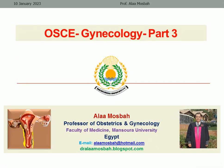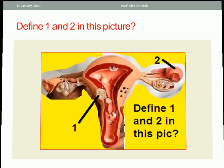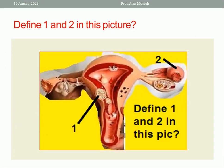Hello everybody, I'm Dr. Ala Musbah, Professor of Obstetrics and Gynecology, Faculty of Medicine, Mansoura University. Let us try to answer some questions in gynecology. Look at this picture and define what is seen in number one and number two. Number one is a uterine mass — this is leiomyoma, also called fibroid or fibromyoma. Number two is showing hydrosalpinx: the tube is dilated and there is fimbrial phimosis, so this is hydrosalpinx.